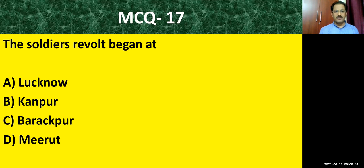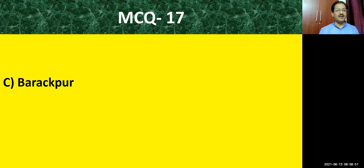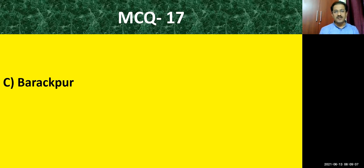MCQ question number seventeen: the soldiers' revolt began at — options: Kakno, Kanpur, Bharakpur, Meerut. The correct answer is Bharakpur. Here the soldiers revolted initially. Mangal Pandey was asked to use the newly given Enfield rifles, but he refused and shot an officer called Hudson. This led to the revolt.